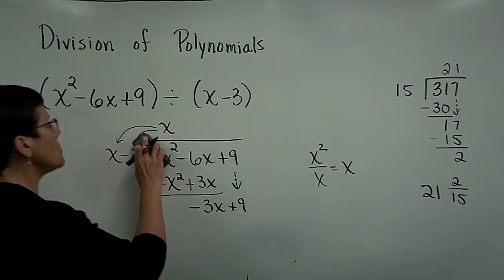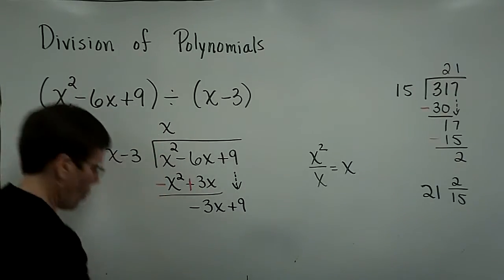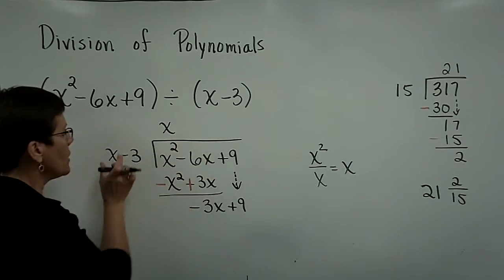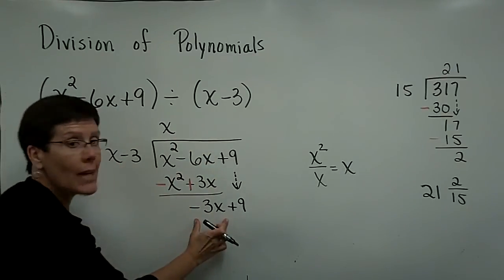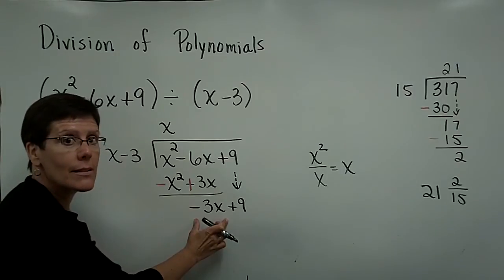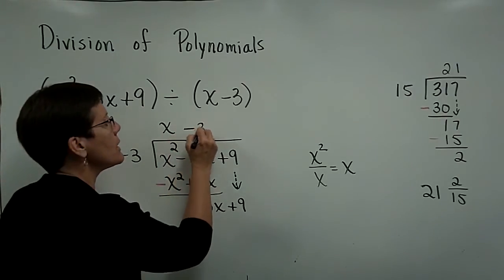So what I want to ask you now is, what would you put in this next spot so that if you multiplied it by x, you got a negative 3x exactly?